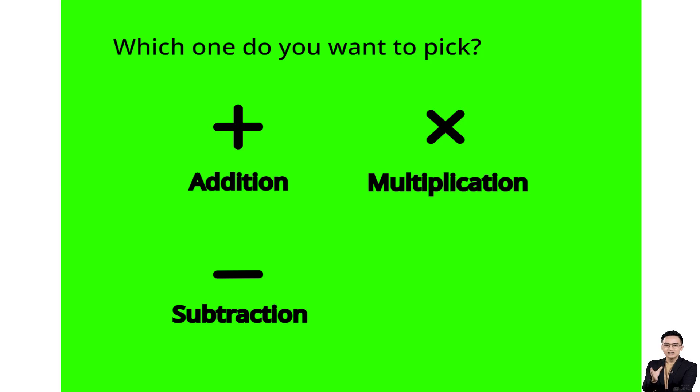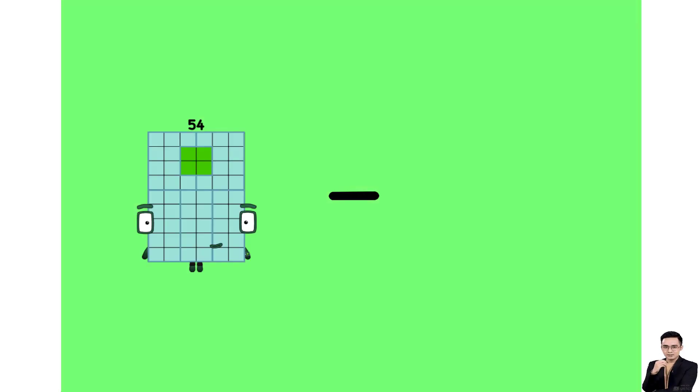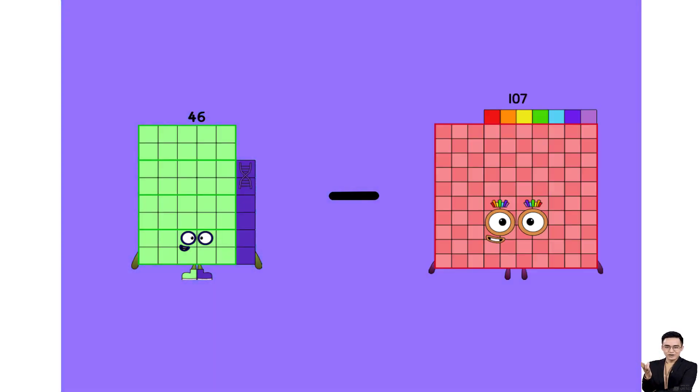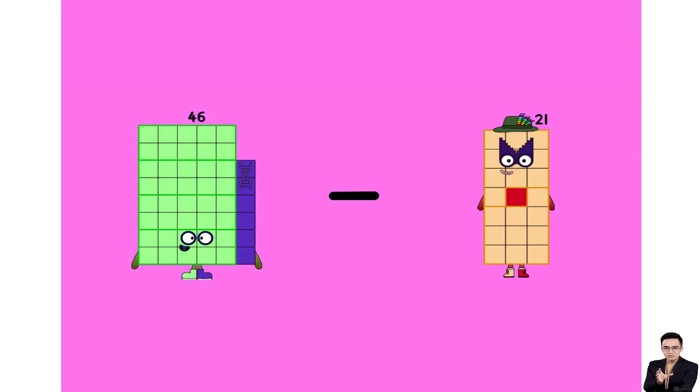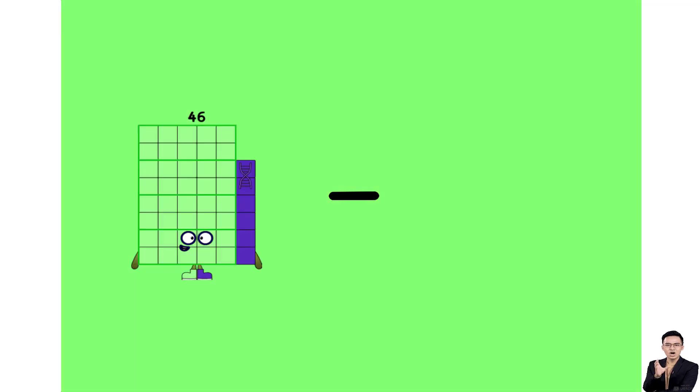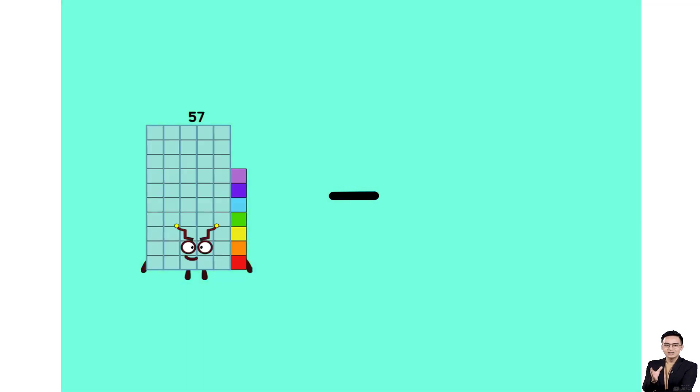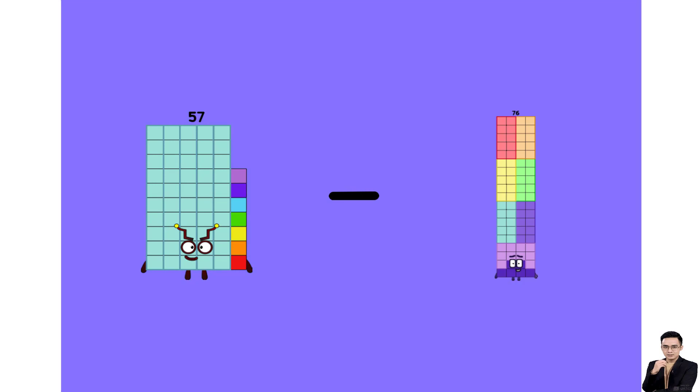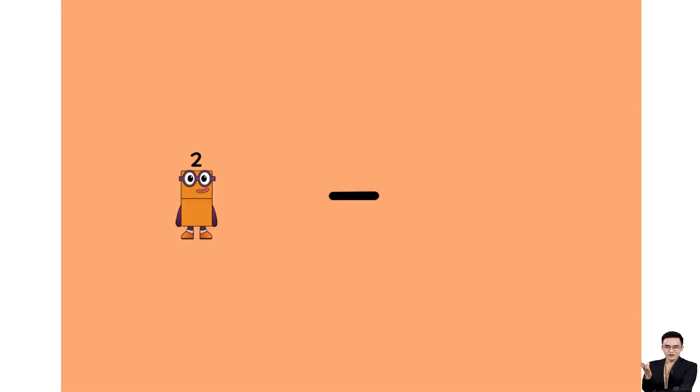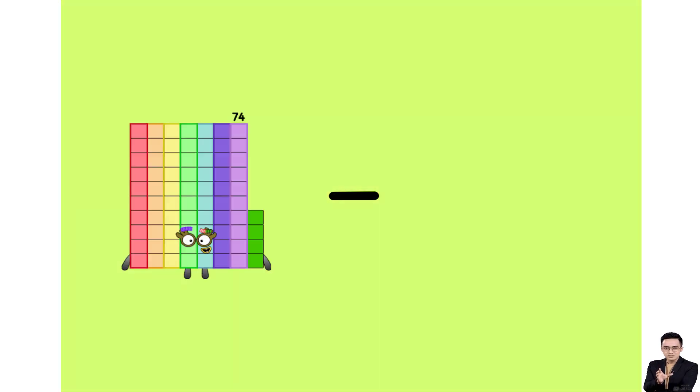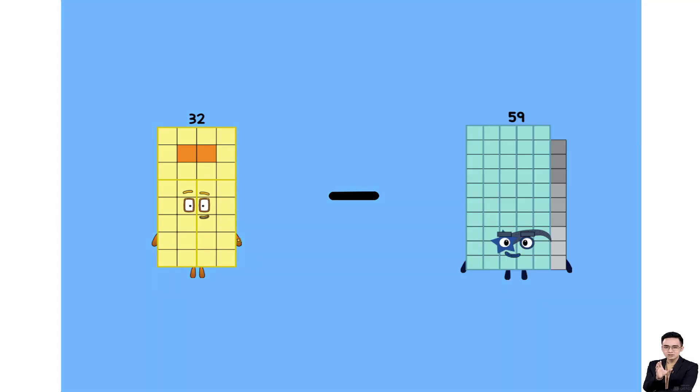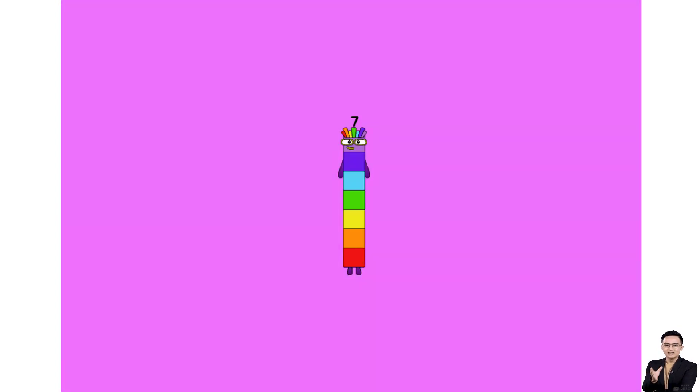Which one do you want to pick? 46 minus 21 equals 25. 57 minus 48 equals 9. 32 minus 25 equals 7. 83 minus 80 equals 3. 57 minus 42 equals 14. 19 minus 19 equals zero.